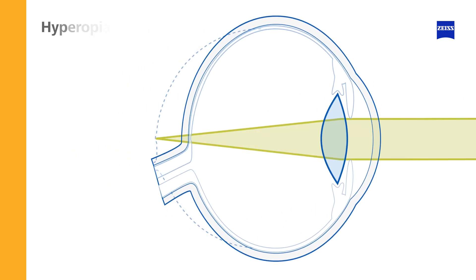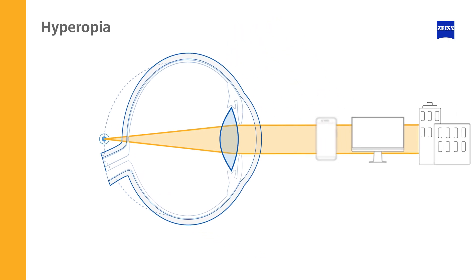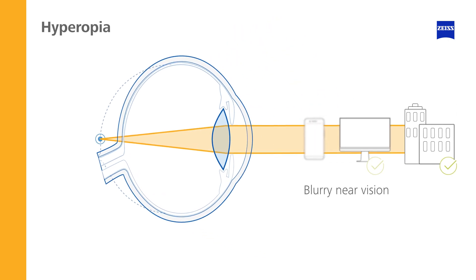If the eye is too short, light rays are focused behind the retina, making near objects appear blurry. This is called hyperopia or farsightedness.